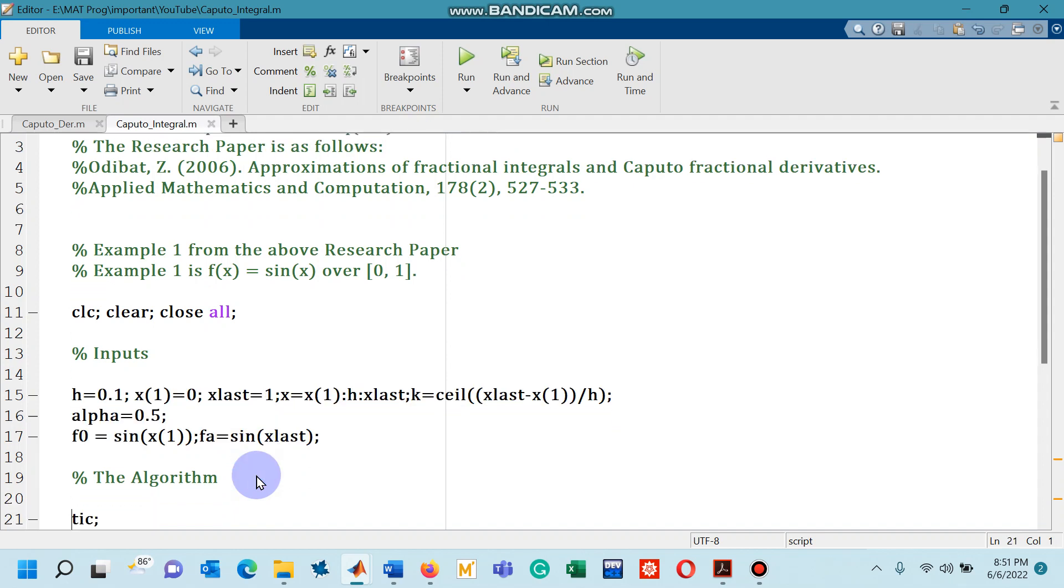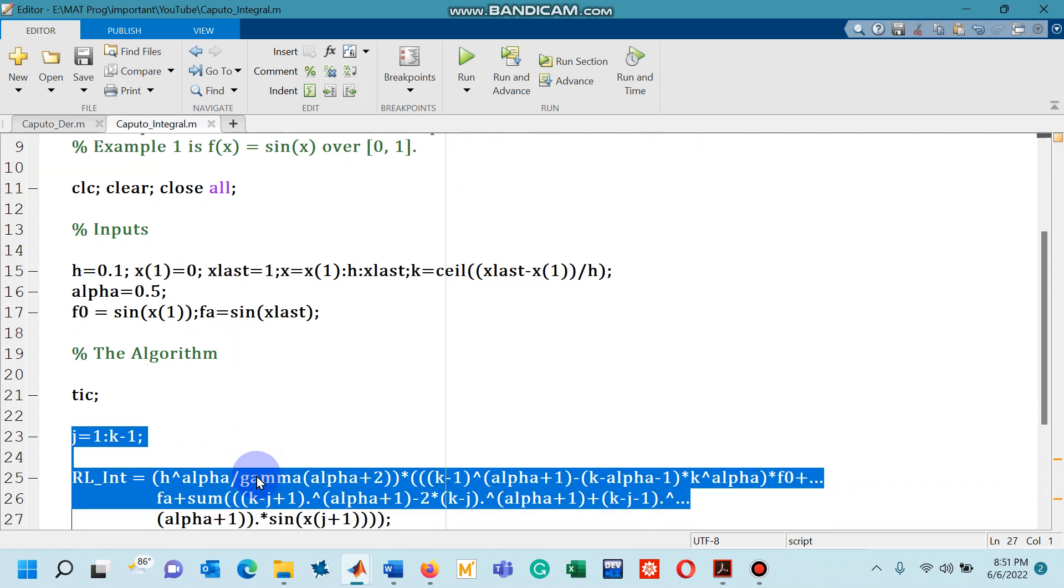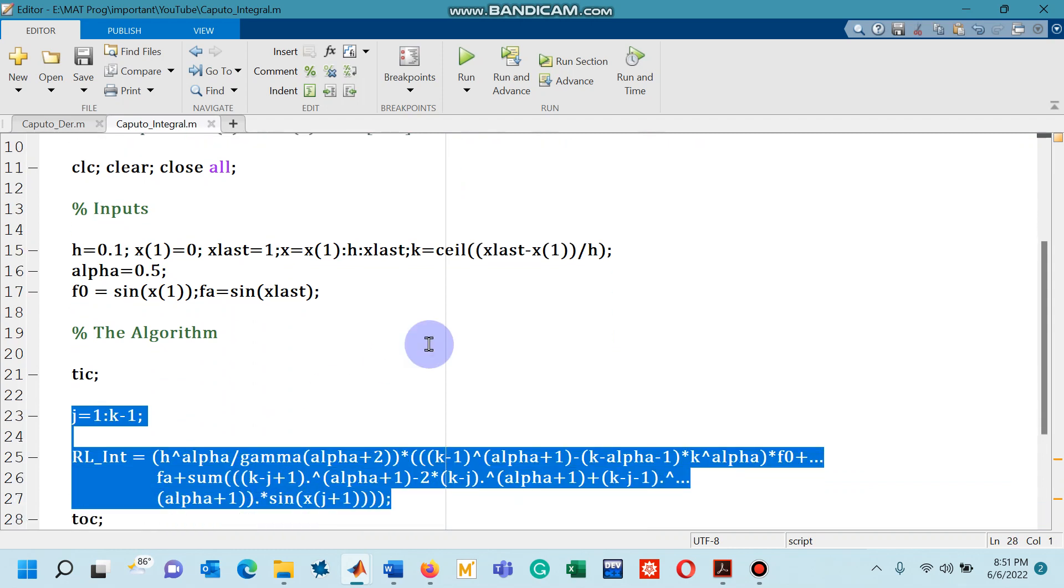And then the major algorithm is something that I have highlighted. So if you tally this highlighted code with the modified trapezoidal rule that was given in equation 2.1 of the research paper, you will come to know that they are the same. So you have to be a little careful regarding the brackets here. Nothing else has to be taken care of.